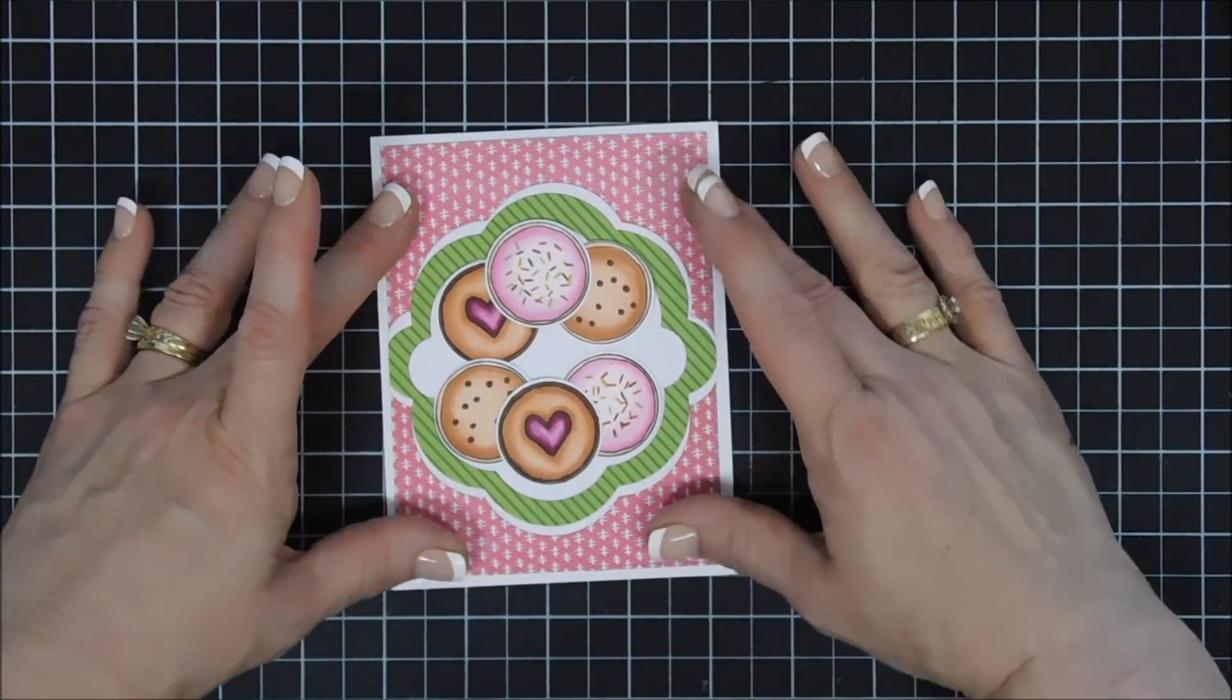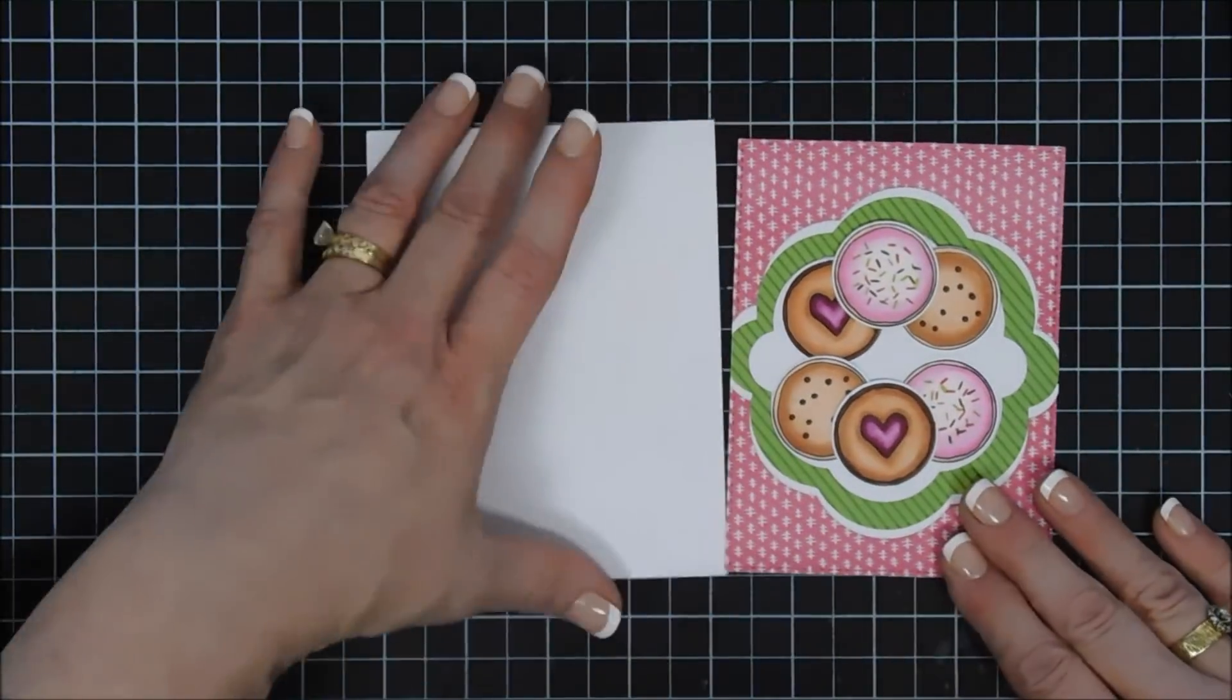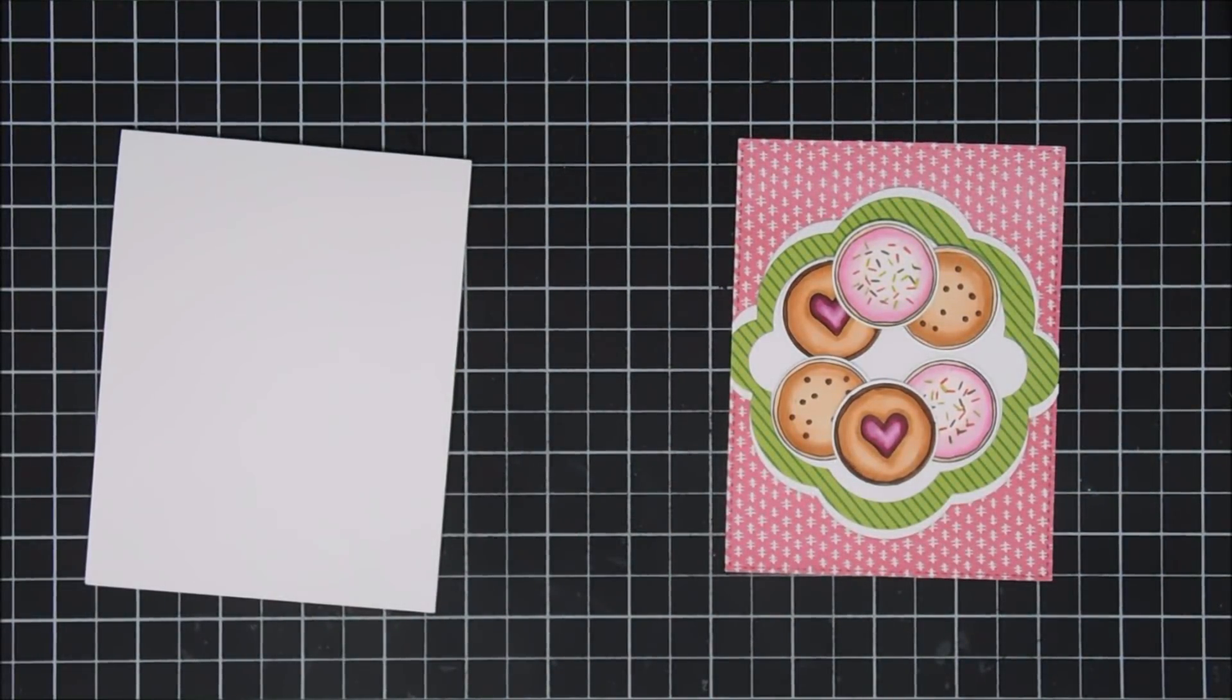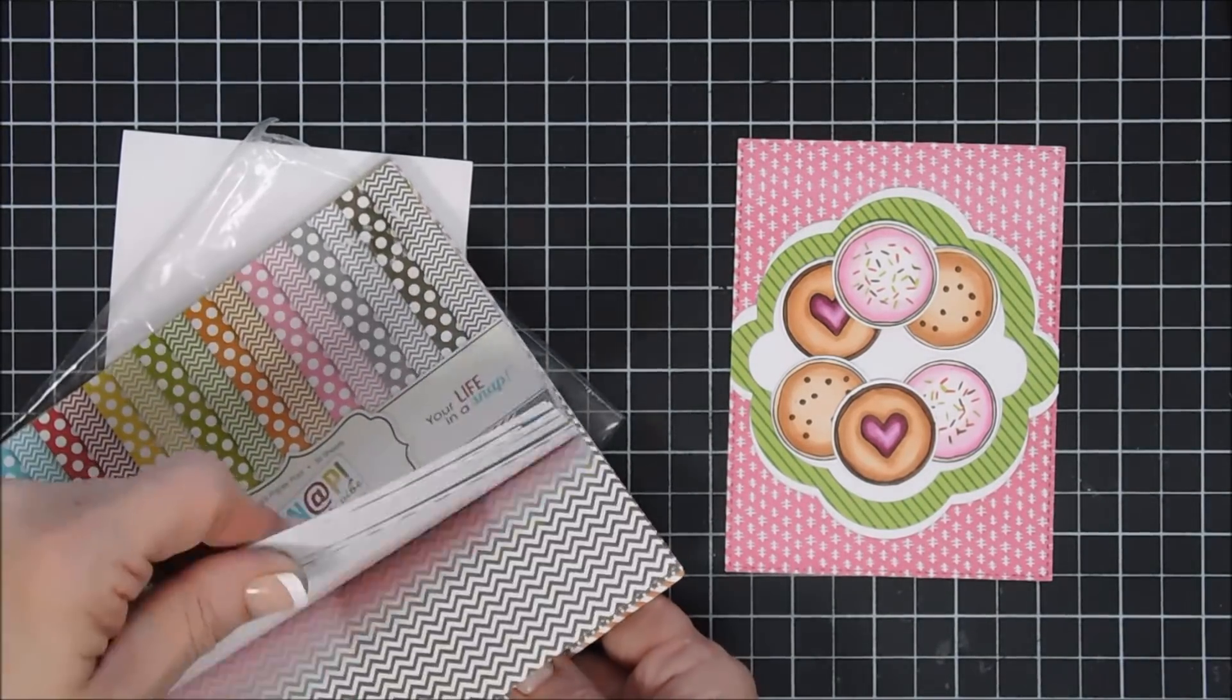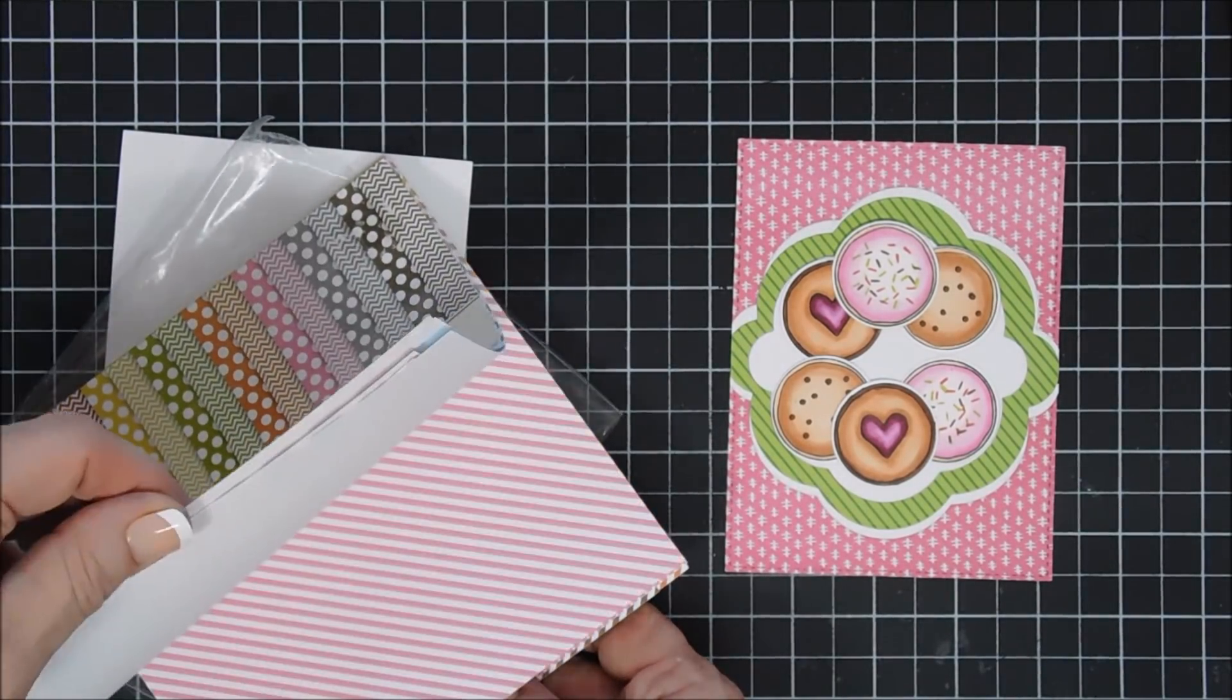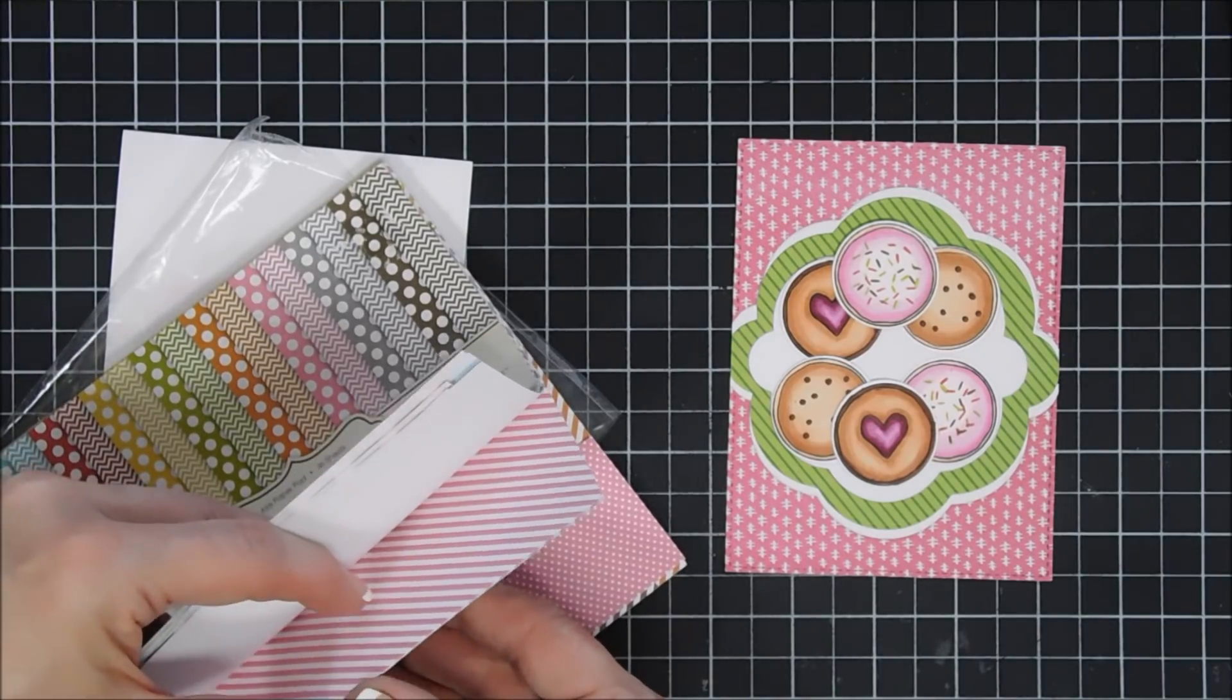The background pattern wasn't flowing right for me. So I'm using a paper pad from Simple Stories, and it is called Snap Color Vibe. It has stripes and polka dots and then a chevron print in here. And I ended up using the pink and white polka dot, the larger polka dot.